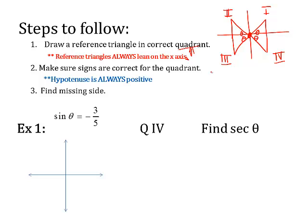Then you want to make sure that your signs are correct for the quadrant, given the clues they give you. In quadrant one, x is positive, y is positive. In quadrant two, x is negative, y is positive. In quadrant three, x is negative, y is negative. In quadrant four, x is positive, y is negative. You're going to use that to get the side lengths correct with the correct signage. Then you can find the missing side using the Pythagorean theorem.